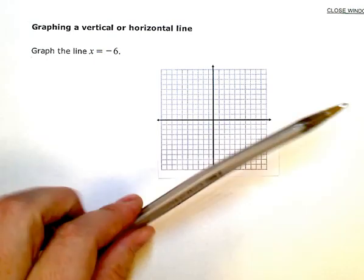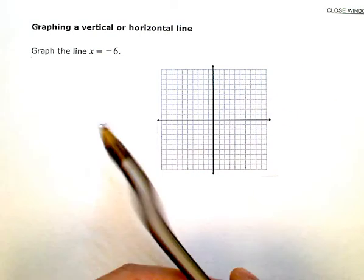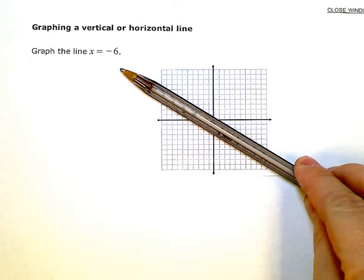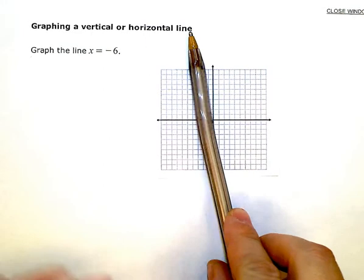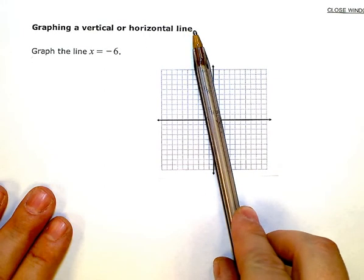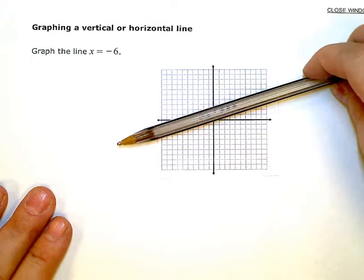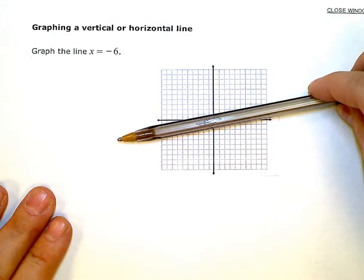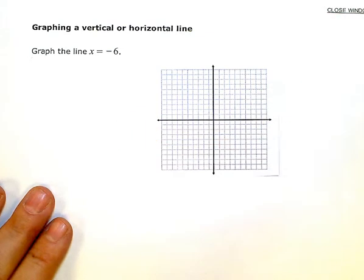It might slant positive, it might slant negative, it might be almost vertical but not quite, or almost horizontal but not quite. It'll always have a slant to it somehow.